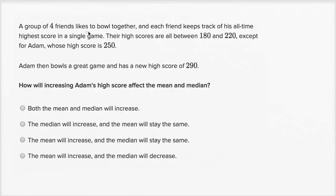A group of four friends likes to bowl together, and each friend keeps track of his all-time highest score in a single game. Their high scores are all between 180 and 220, except for Adam, whose high score is 250. Adam then bowls a great game and has a new high score of 290. How will increasing Adam's high score affect the mean and median?